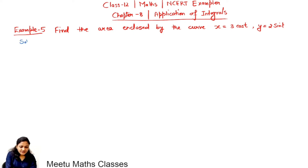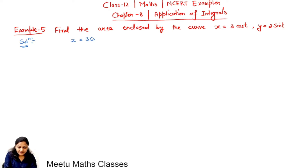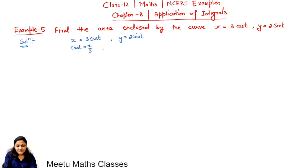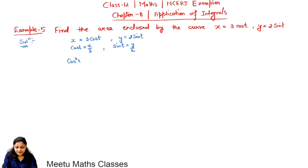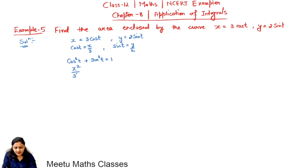To find the area enclosed by this curve, we can observe that this is a parametric curve with parameter t. To eliminate parameter t, we find cos t equals x by 3 and sin t equals y by 2. Since cos²t + sin²t = 1, we get x²/9 + y²/4 = 1, and this is the required curve.